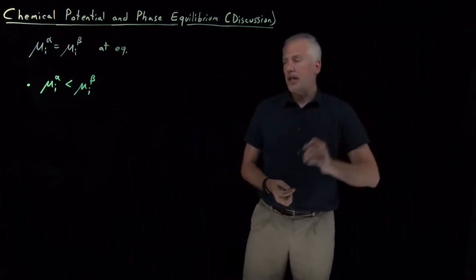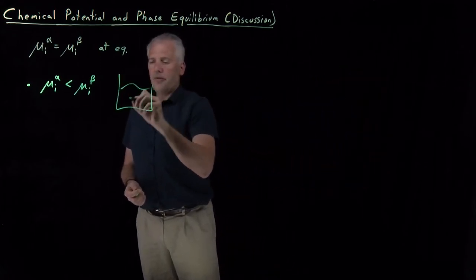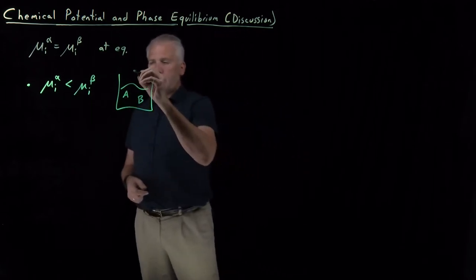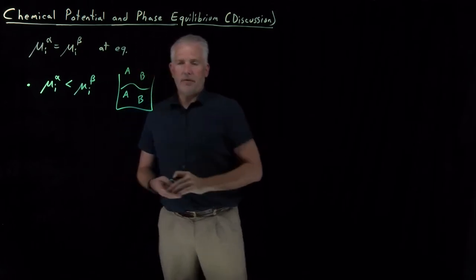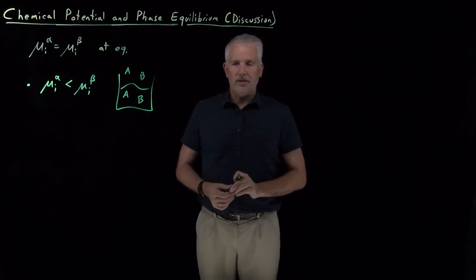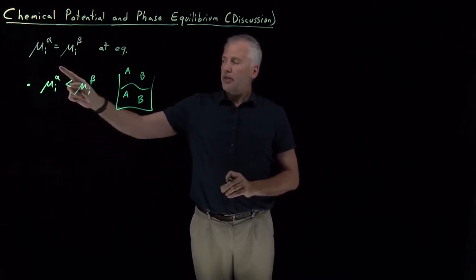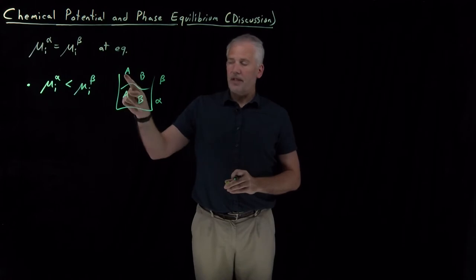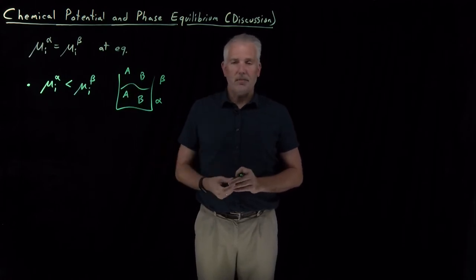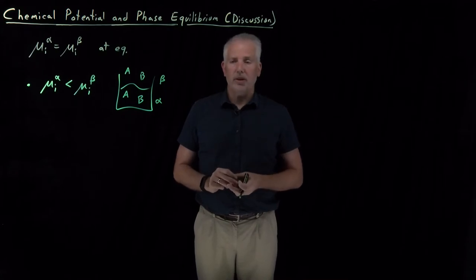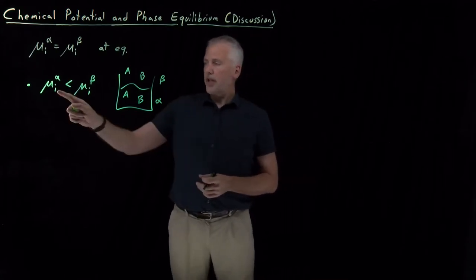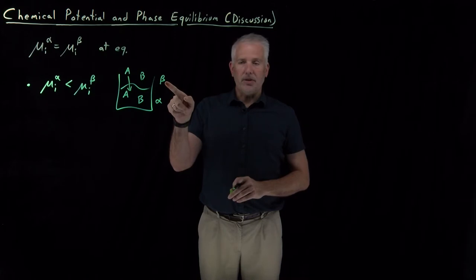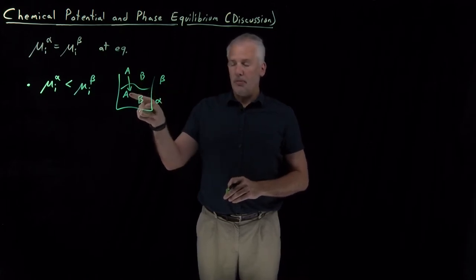If we draw a diagram, we've got two different phases — some molecules of A and molecules of B in phase alpha, and some molecules of A and molecules of B in a different phase beta, maybe a gas above a liquid or any pair of phases. If the chemical potential is lower in phase alpha than in phase beta, the system is not in equilibrium and will spontaneously move to achieve equilibrium. Molecules from the beta phase, the higher chemical potential phase, are spontaneously going to move into the other phase.